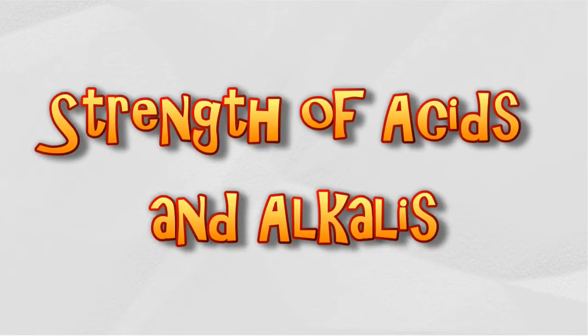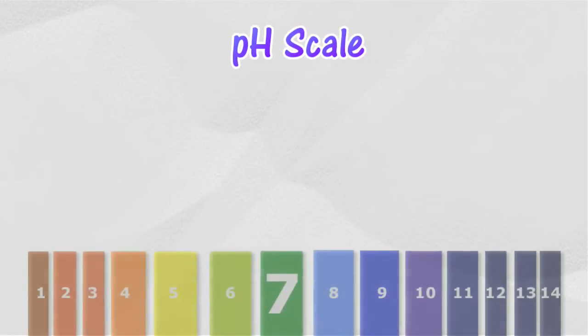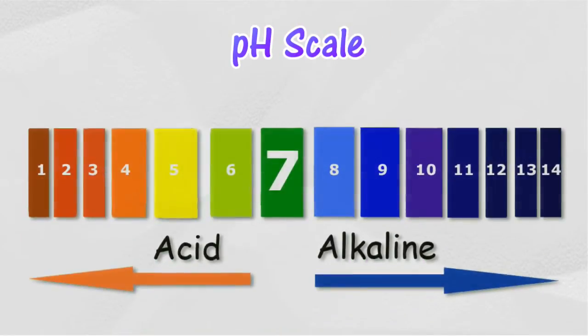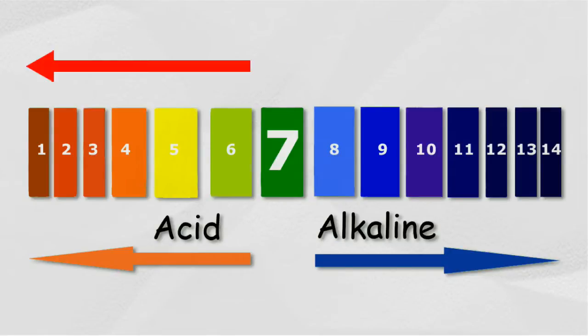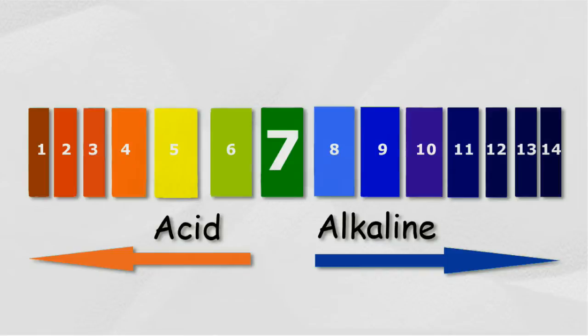The pH scale is a numerical scale ranging between 0 to 14 that shows whether an aqueous solution is acidic, neutral, or alkaline. The pH value of an acidic solution is below 7, the pH value of a neutral solution is 7, and the pH value of an alkaline solution is above 7.